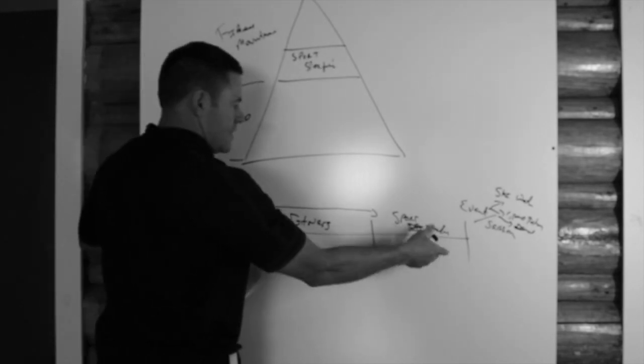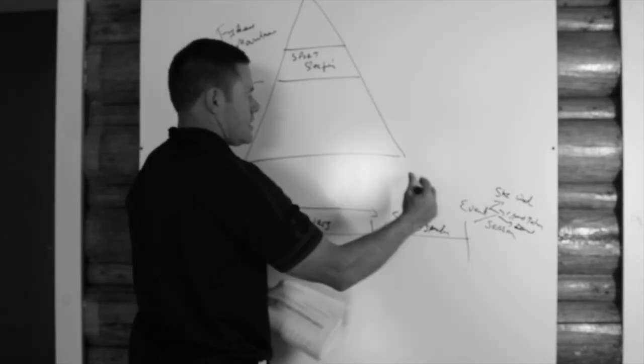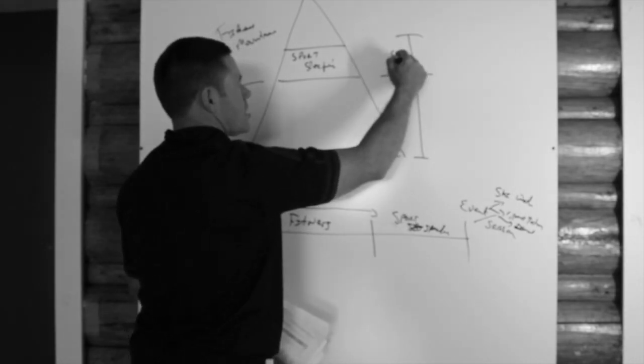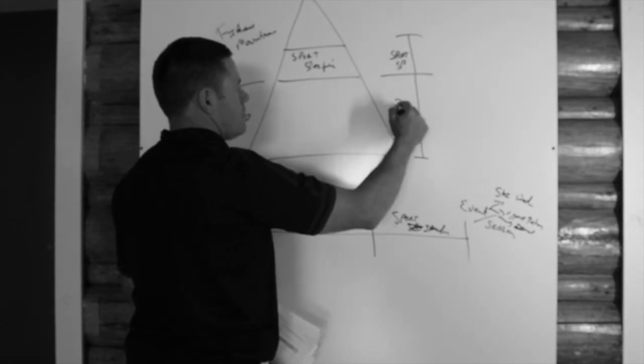If I was to take this chart and kind of turn it up on its edge, it would be like this. This is where you start your sport specific cycle. And this would be base.